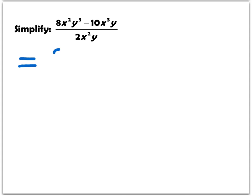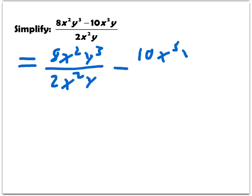I can take this first term, 8x squared y cubed, divide it by the denominator 2x squared y, and then subtract the second term, 10x cubed y, and divide it by the denominator 2x squared y. Because we're subtracting in the numerator, this is completely legal. From there we can simplify things.